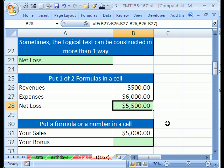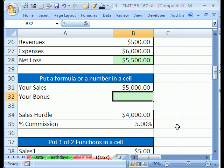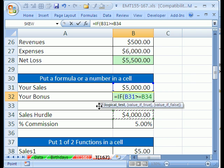Now, let's see how to put a formula or a number. So this is a bonus situation. Here's your sales, and we want to calculate your bonus. It's either going to be your sales times whatever your commission rate is or zero. So there'll be a formula or zero. Equals IF, and we're going to say your sales greater than or equal to the sales hurdle. If that's true, we put a comma and put your sales times the commission rate. So that's the formula.